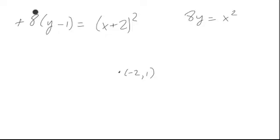Now, to help us with that, see this number right here? This is called the focal diameter. One-fourth of it, which is 2, we call p.